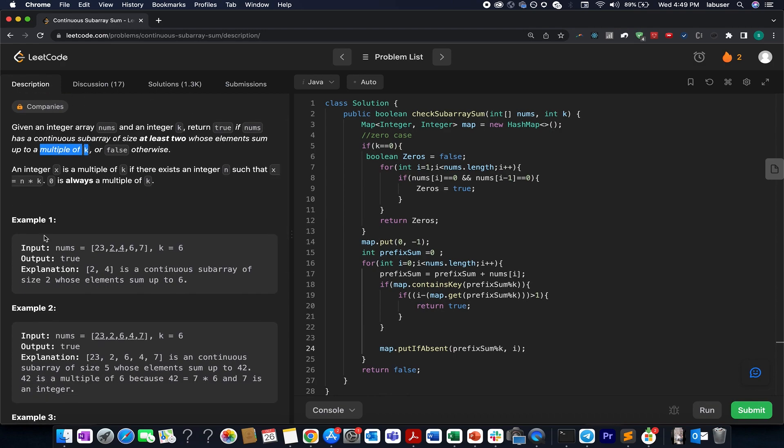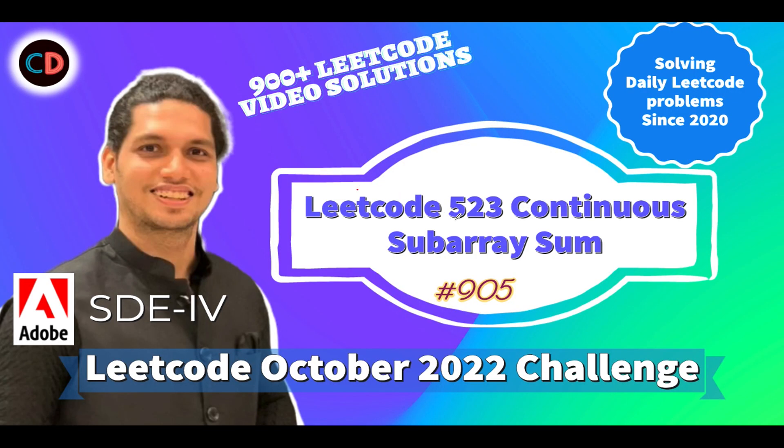Here they have provided us with an example. I'll be walking you through the algorithm via the same test case through the presentation. So let's quickly hop on to it. LeetCode 523, continuous subarray sum. This is a medium level question as I already told.